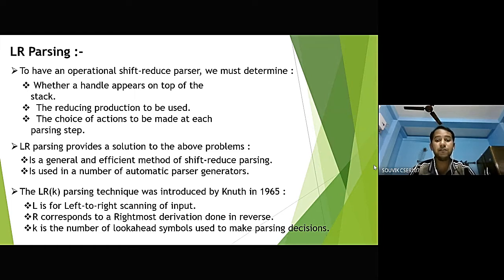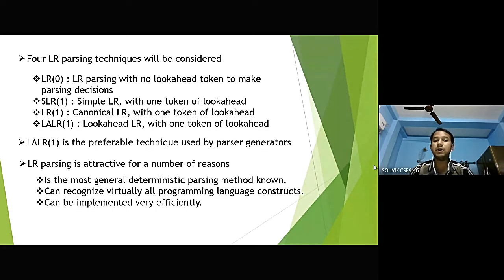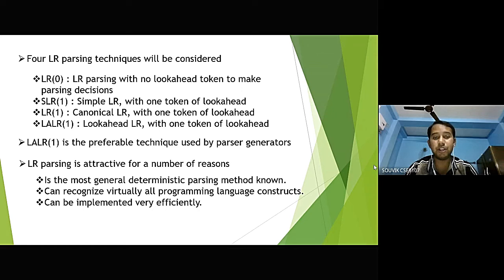The LRK parsing technique was introduced by Knuth in 1965. L stands for left-to-right scanning of input, R represents right-most derivation done in reverse, and K is the number of look-ahead symbols used to make parsing decisions. Four LR parsing techniques will be considered: LR0, which is LR parsing with no look-ahead token; SLR1, which is simple LR with one token of look-ahead; LR1, which is canonical LR with one token of look-ahead; and LALR1, which is look-ahead LR with one token of look-ahead.